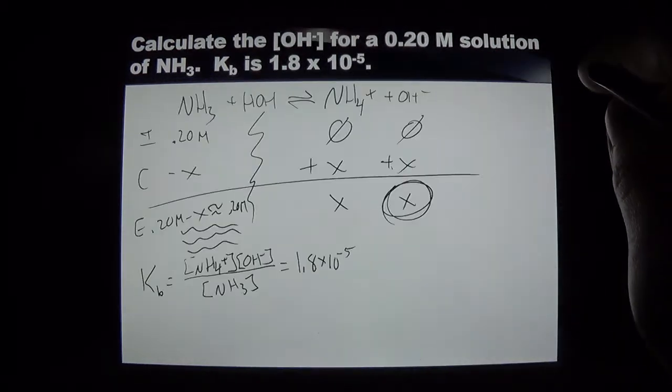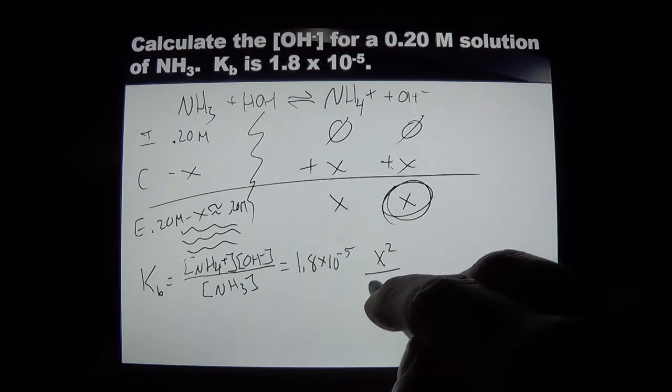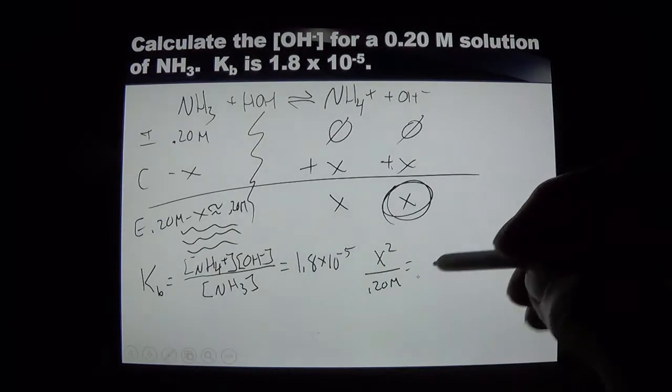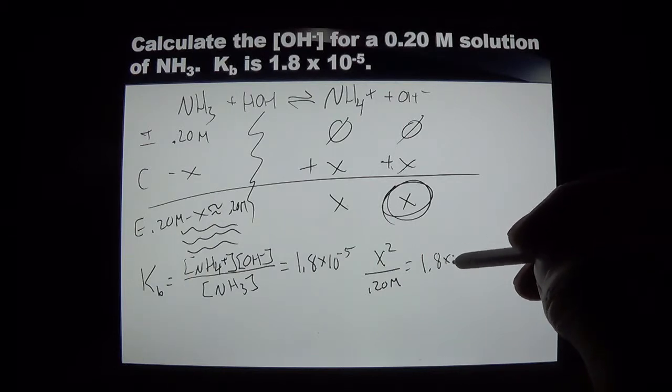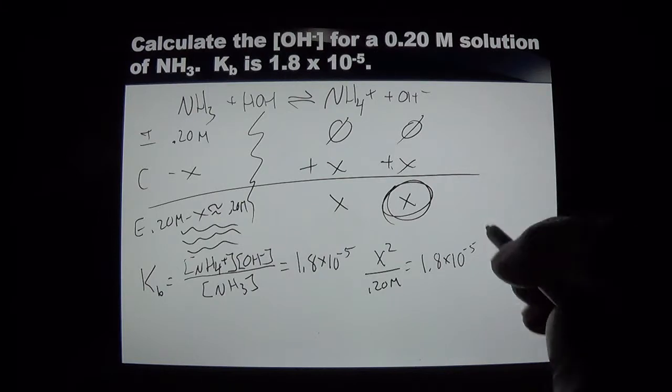And I'm going to use up such a tiny amount. By the time we round sig digs, it made no difference. Now I do actually know that my KB is 1.8 times 10 to the minus 5. So now we're going to do our math. So I have x squared on top, because that's x, that's x. And I'm going to divide by 0.02 molarity. And I'm going to say that is equal to 1.8 times 10 to the minus 5. So now calculator time. I know we look forward to this each and every time. I'm going to take my 1.8 times 10 to the negative 5. And I'm going to multiply by 0.2. And don't forget to finish it off by taking the square root of it.